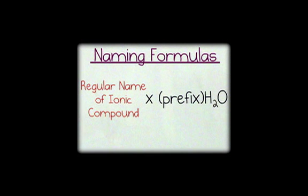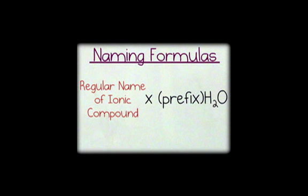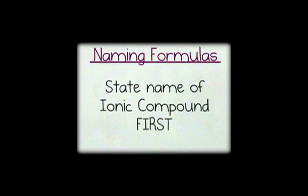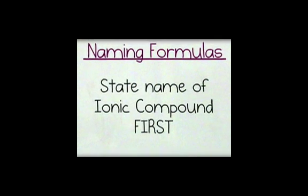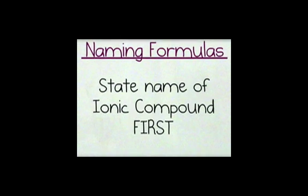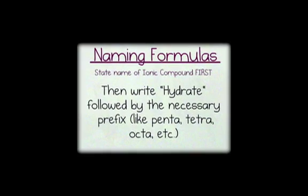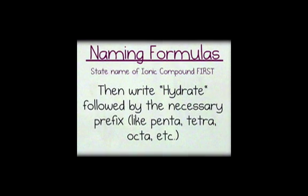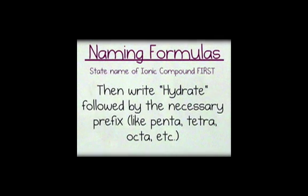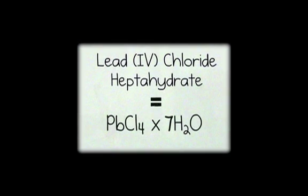When naming the formula for a hydrate, the name of the ionic compound — type 1 or 2 — applies regularly. However, the ending has a prefix for the number, then hydrate. When one has the formula of the hydrate and needs to state the name, the ionic compound written at the beginning is named as per usual, and the hydrate is given a prefix like penta, octa, or tetra, followed by the word hydrate.